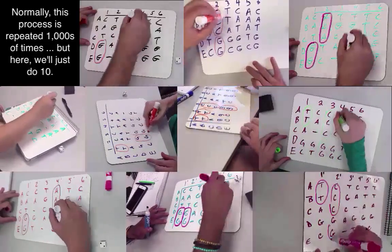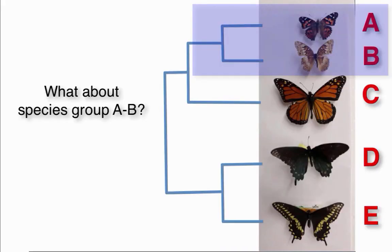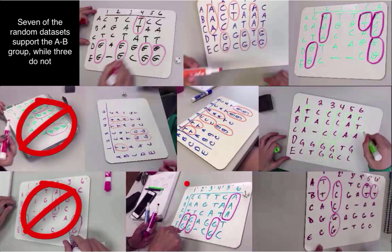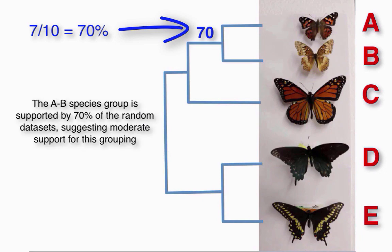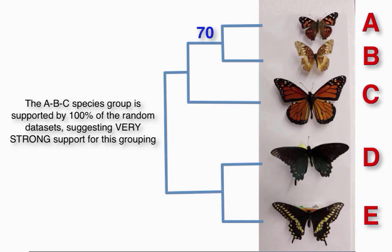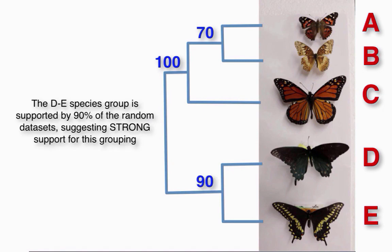Including drawing circles to group species together. Now we can calculate the percent of random data sets that each group in our phylogeny was supported. So, what about the group containing species A and B? Seven of the random data sets supported A and B, while three did not. Since 7 out of 10 is 70%, it suggests that the A and B group is supported by 70% of the data sets. If we repeat this process for the A, B, C group, we see that 100% of random data sets support this particular group. And for the D, E group, 90% of data sets support it.